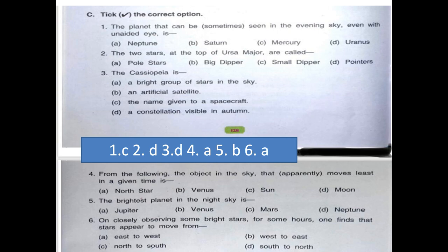Question number six. On closely observing the sun bright stars for some hours, one finds that the stars appear to move from options are east to west, west to east, north to south and south to north. And our answer is A, east to west.